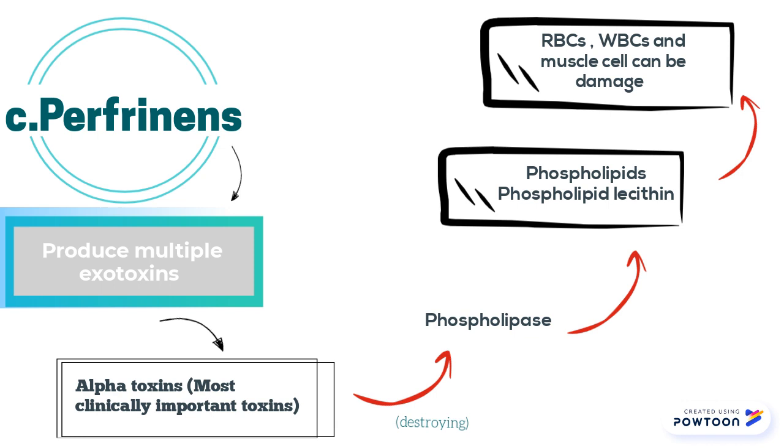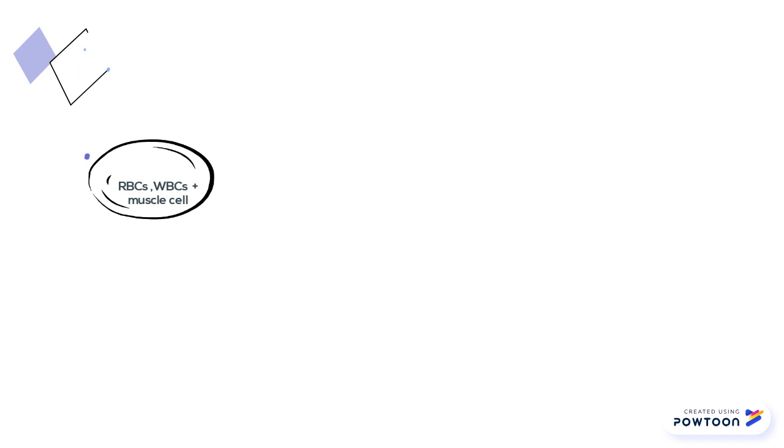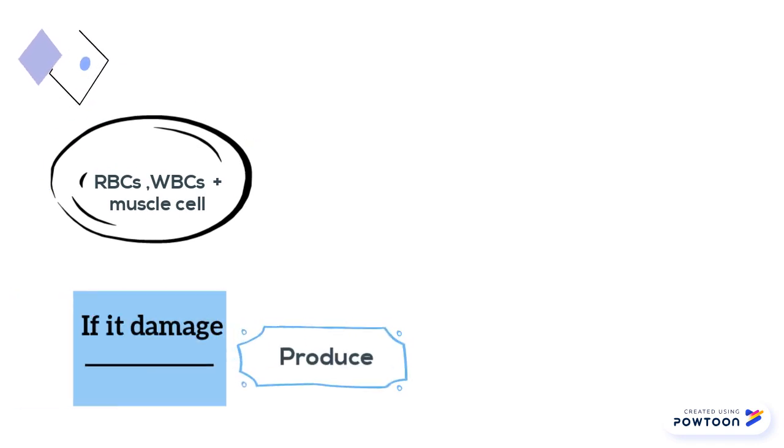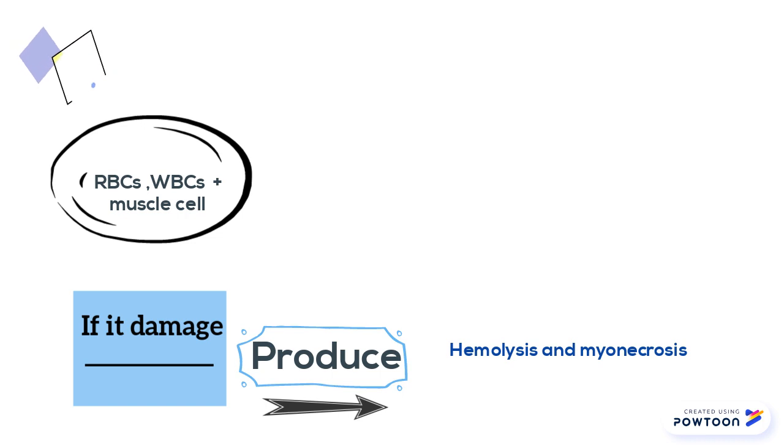In particular, the phospholipid lecithin, which is in cell walls of RBCs, WBCs, and muscle cells, can be damaged. This produces the characteristic hemolysis and myonecrosis.